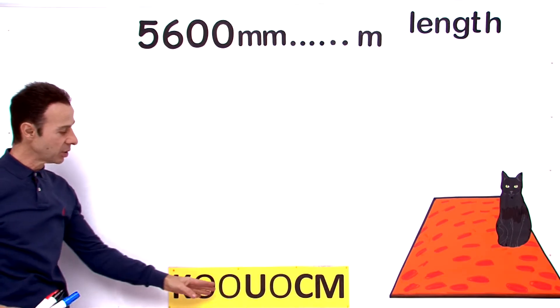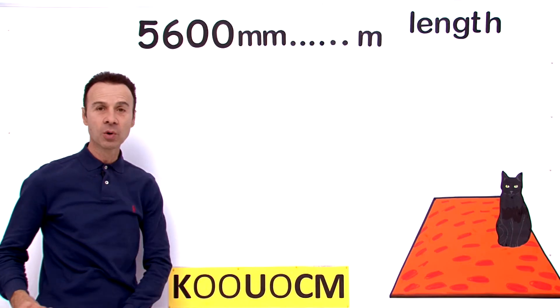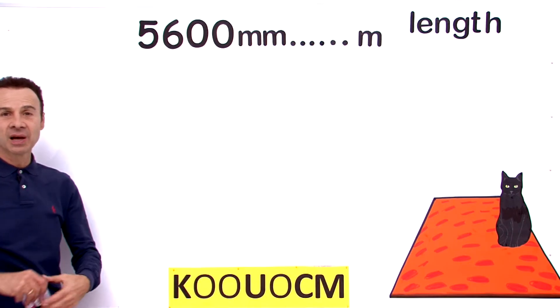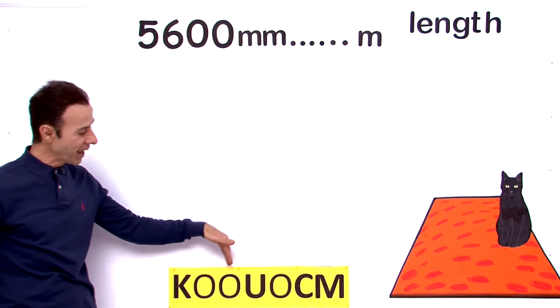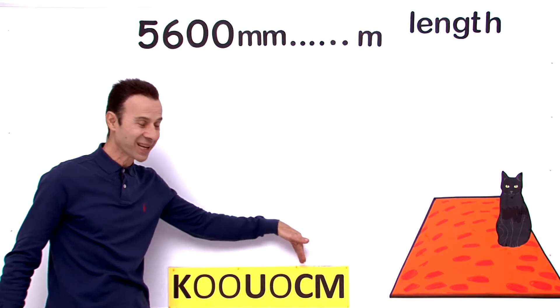Across down here: K O O U O C M. What does it stand for? The acronym is a phrase. It stands for keep off our ugly orange cat mat.